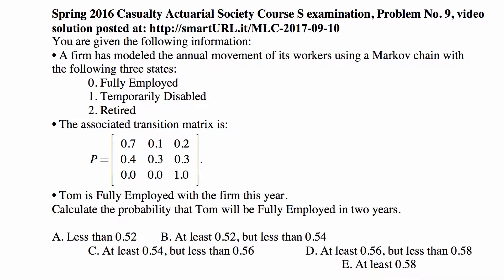You are given the following information. A firm has modeled the annual movement of its workers using a Markov chain with three states: State 0 is fully employed, State 1 is temporarily disabled, and State 2 is retired. The associated transition matrix has rows corresponding to current states 0, 1, and 2, and columns corresponding to states after one year. So 0.7 is the probability of transition from state 0 to state 0, 0.1 is the probability of transition from state 0 to state 1, and 0.2 is the probability of transition from state 0 to state 2.